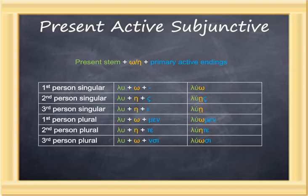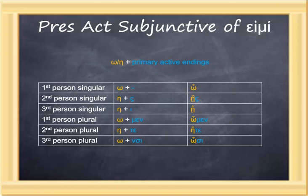The verb εἰμί is such that when the connecting vowel is lengthened, it swallows up what remains of the stem, and so only the endings occur — connecting vowel and primary active endings: ὦ, ᾖς, ᾖ, ὦμεν, ἦτε, ὦσι. Notice the smooth breathing marks, which help distinguish some of these forms from the relative pronoun we've seen previously.